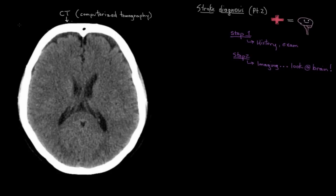The end result is that you get to look at the brain in lots of different views. This is a view of the brain generated with a CT scan, looking at it as if it's been cut from front to back — what's known as an axial view. This is a normal brain; no stroke or anything has happened to this brain.